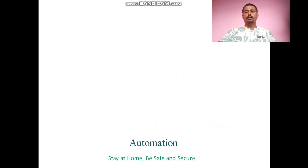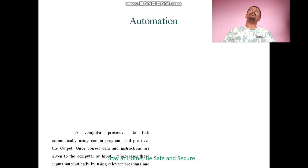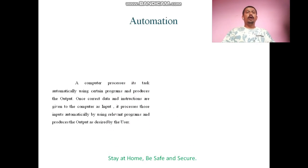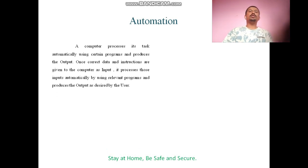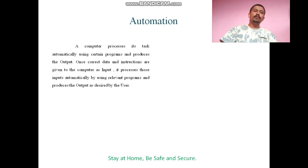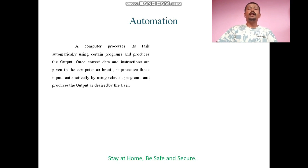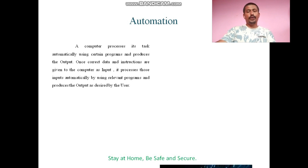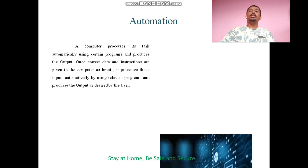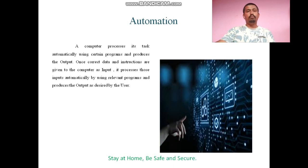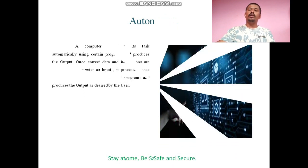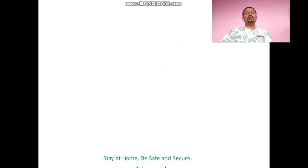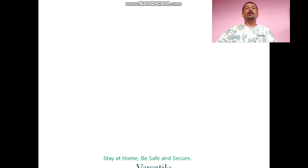The next feature of a computer is automation. Automation is the feature of doing work automatically. A computer processes its tasks automatically using certain programs and produces the output. Once correct data and instructions are given as input, it processes those inputs automatically using relevant programs and produces the output as desired by the user, because of which it is also referred to as an automatic machine or automatic calculating device.